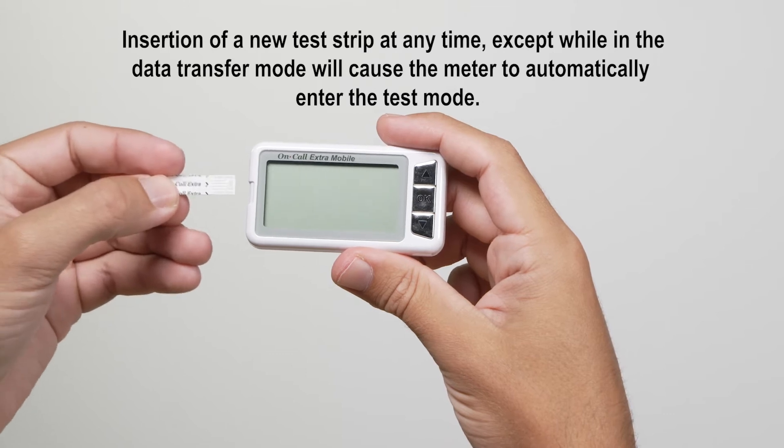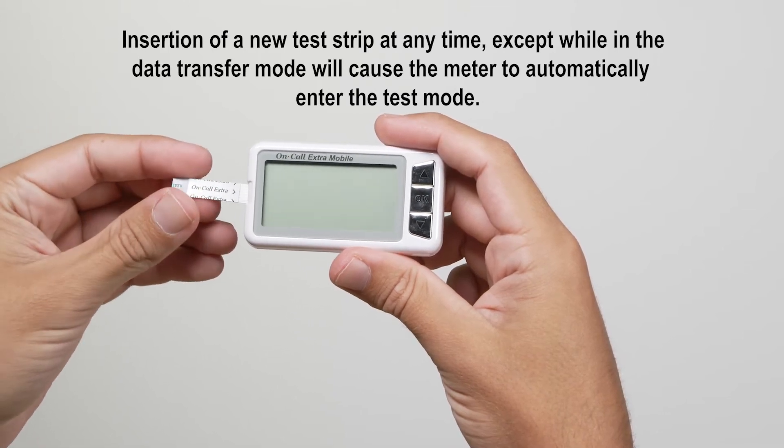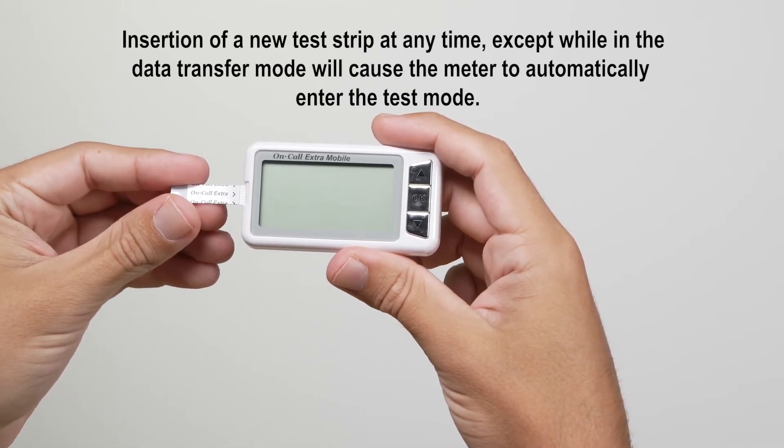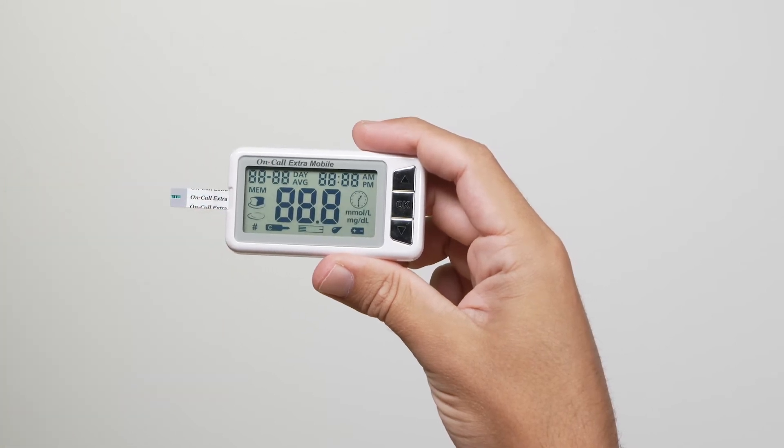Insert a test strip into the strip port, contact bars end first and facing up. This will turn on the meter and display all the display segments.